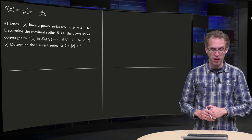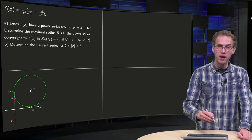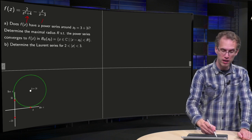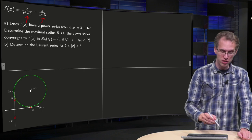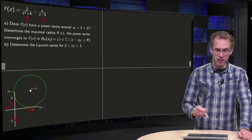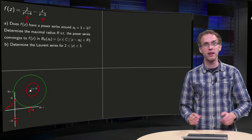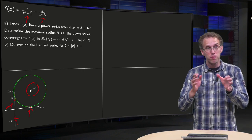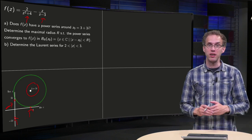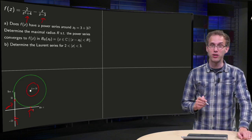First question: does f(z) have a power series around 3 plus 3i? Let's make a picture. f(z) has singularities at z equals plus or minus 2i and at z equals 3. So the singularities are at those points. That means f(z) is analytic at 3 plus 3i, so we can form a power series of f(z) around 3 plus 3i.